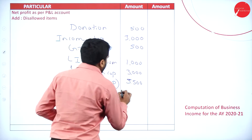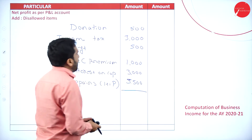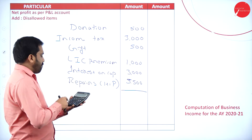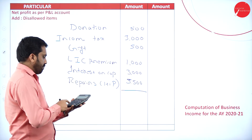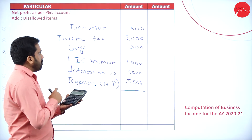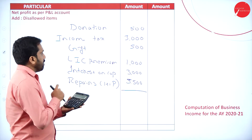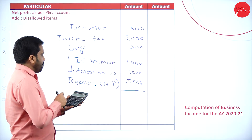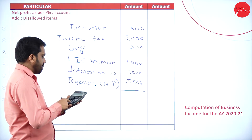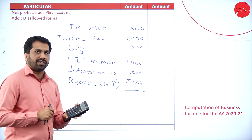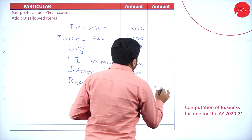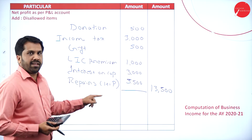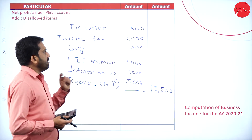Now we will add all these items. Total: 500 plus 3,000 plus 500 plus 1,000 plus 3,000 plus 5,500. I got 13,500. So 13,500 is your total additions.